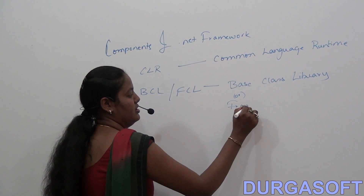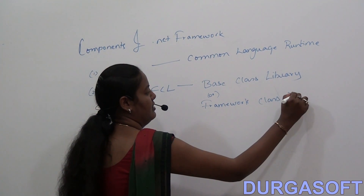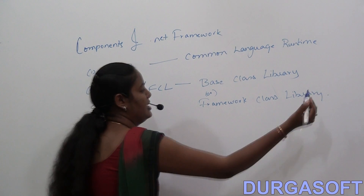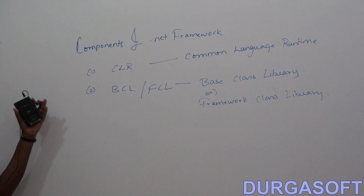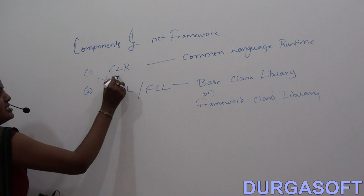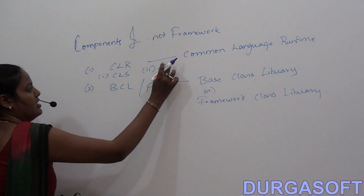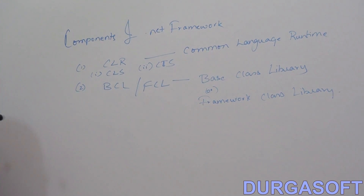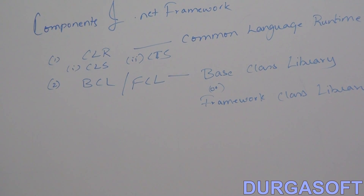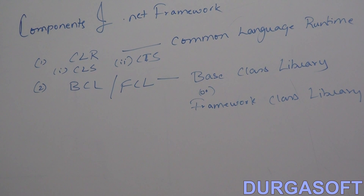Within CLR, when we talk about the Common Language Runtime, we need to talk about CLS and CTS. CLS stands for Common Language Specification and CTS stands for Common Type System. Let us start with CLR — what is CLR?